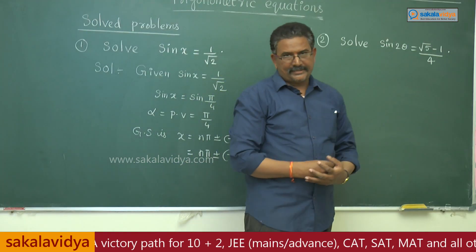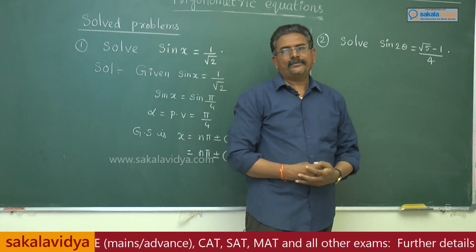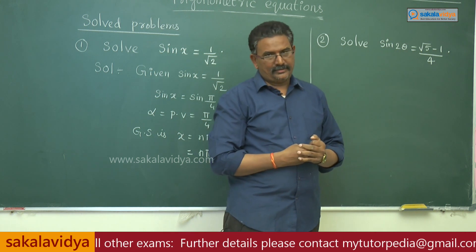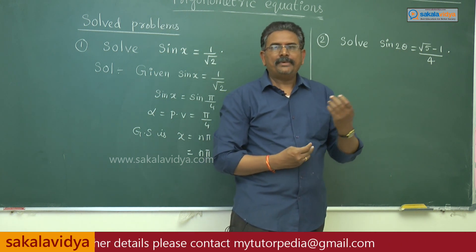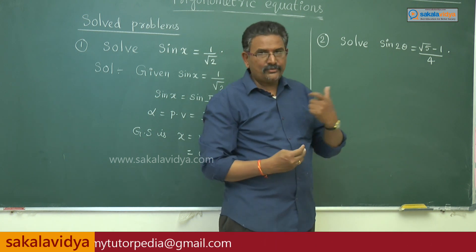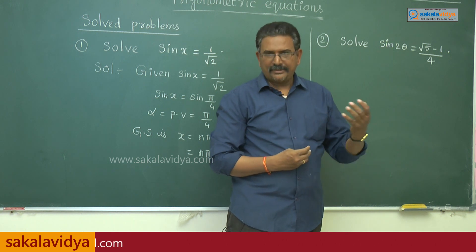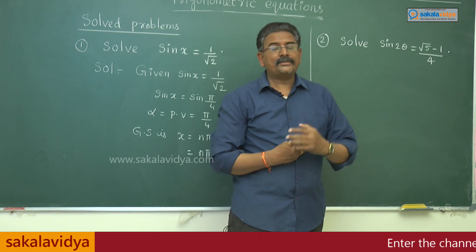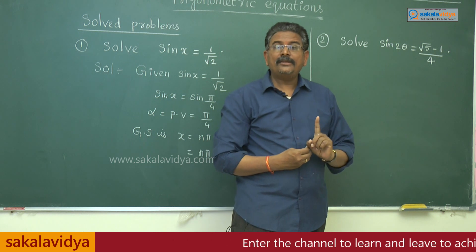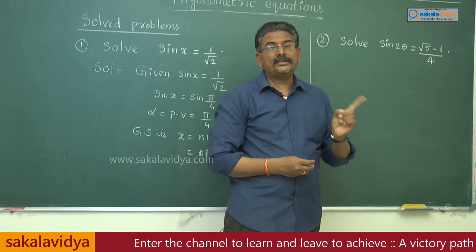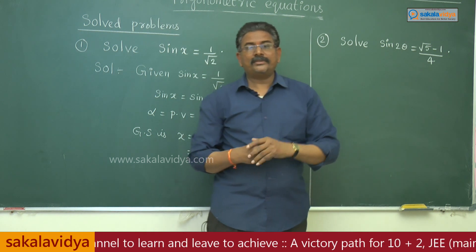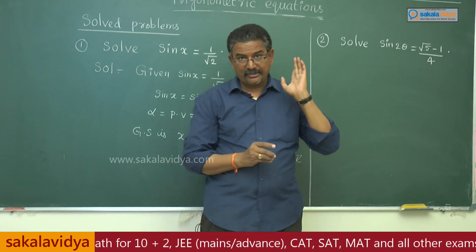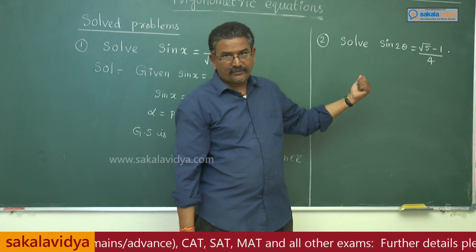Let us solve the second example: sin 2θ = (√5 − 1)/4. Here (√5 − 1)/4 equals sin 18°, and 18° is equivalent to π/10 radians. So sin 2θ = sin(π/10), where π/10 is the principal value. Important: π/10 is the principal value for 2θ — do not write the principal value for θ as π/20. Write π/10 directly. This is very important.